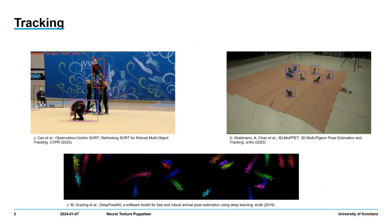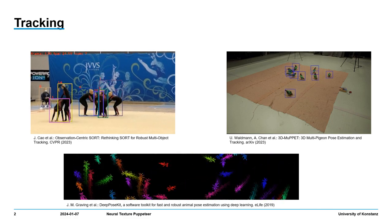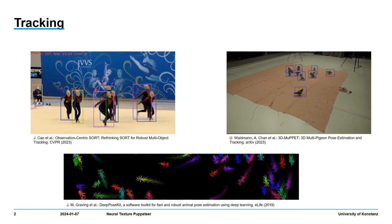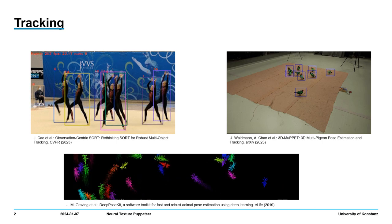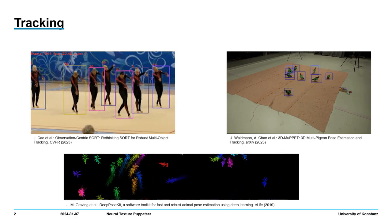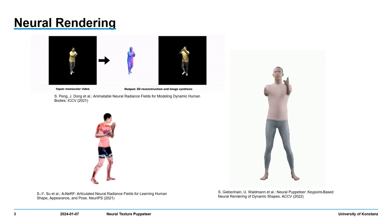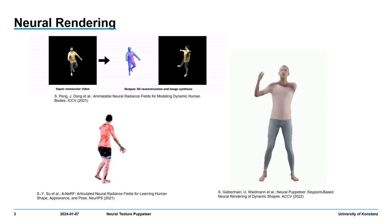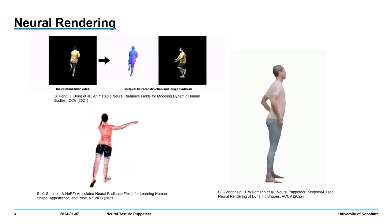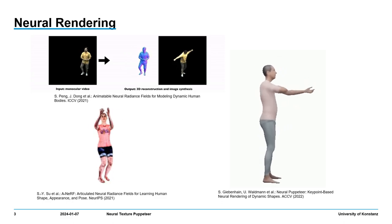Tracking is a crucial task in many vision applications, ranging from sports to the study of collective behavior, where re-identification is important to keep track of individuals. On the other hand, neural rendering is a vast field of research and has brought a big boost to many vision applications.